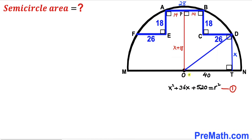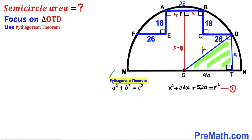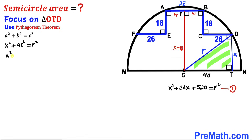In the next step, I have connected center O with vertex D. OD is also the radius r. Focusing on right triangle OTD and applying the Pythagorean theorem, the hypotenuse is r and the two legs are 40 and x. So we get: x² + 40² = r², which simplifies to x² + 1600 = r². I'll label this as equation 2.